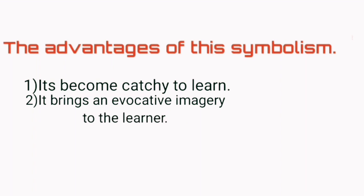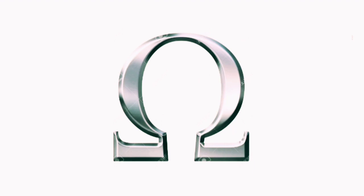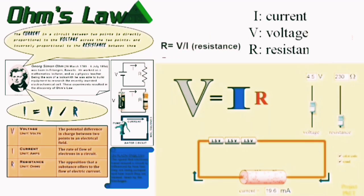And the advantages that we get by these letters is that it becomes catchy to learn and it brings evocative imagery to the learner. It helps to recapitulate everything that is related to the symbol. For example, whenever we see omega, we easily understand that there must be a talk of resistance.